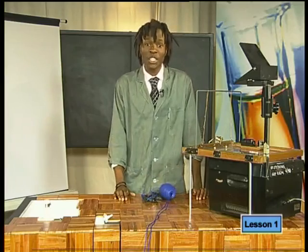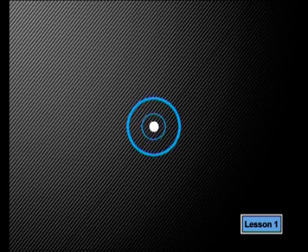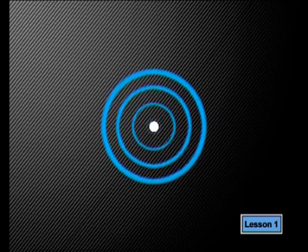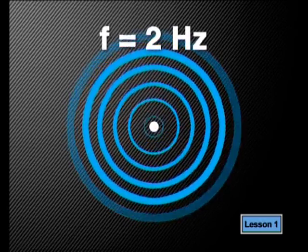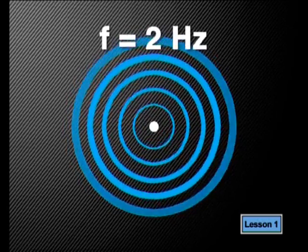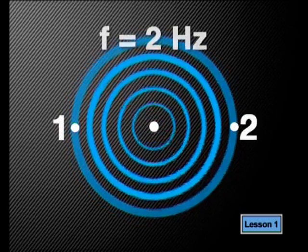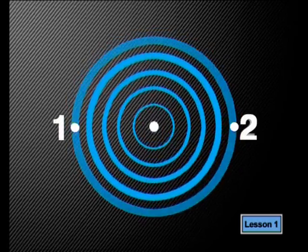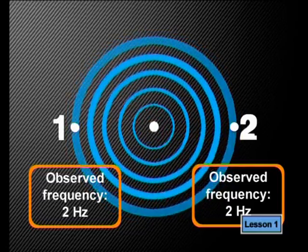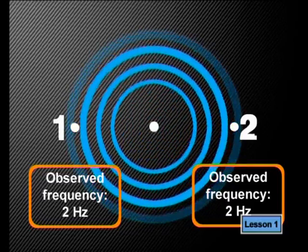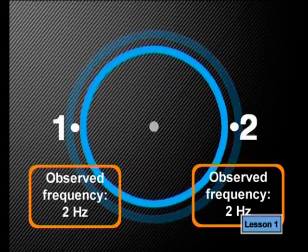Let's go back to the studio to explain the changes we've observed. Let's start by looking at the water waves experiment again. Let's say that the frequency of the source is set at two hertz, meaning two ripples spread outward from the source each second. First, let's consider what happens when the source stays in its position and does not move. Imagine there is an observer in front of the source at point one and one behind the source at point two. The observer at point one would observe exactly the same frequency as the observer at point two — both would see two ripples passing them each second.